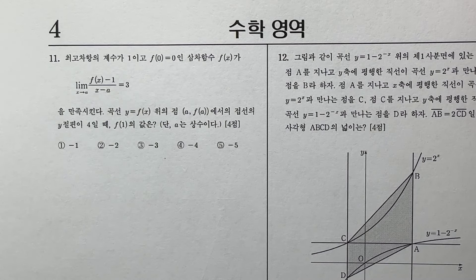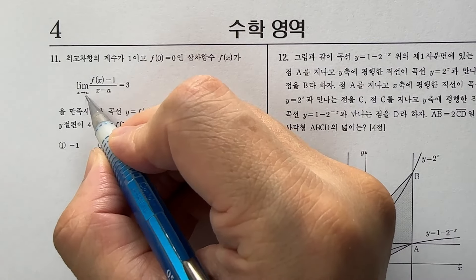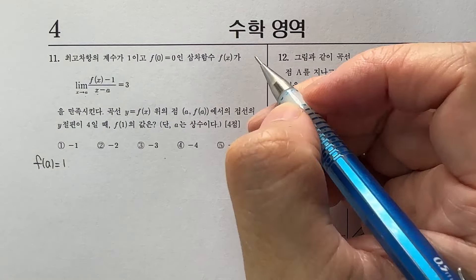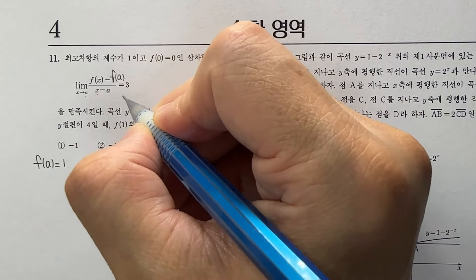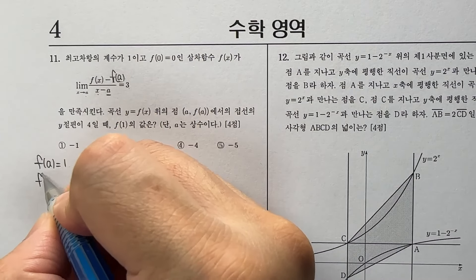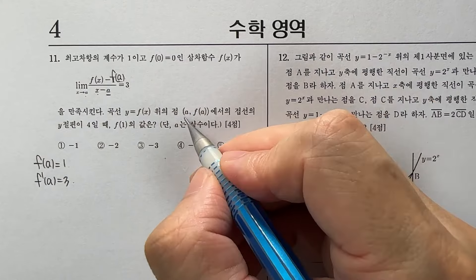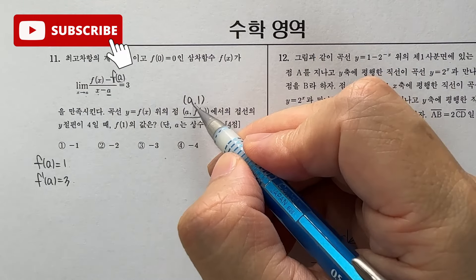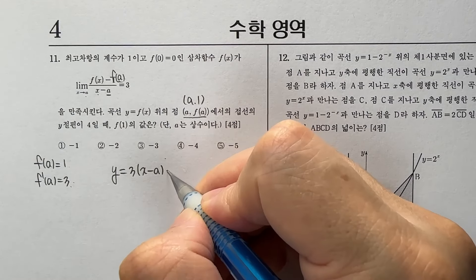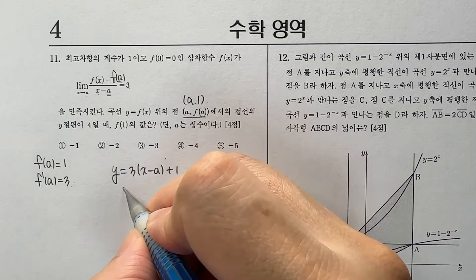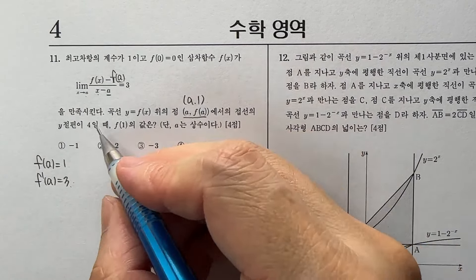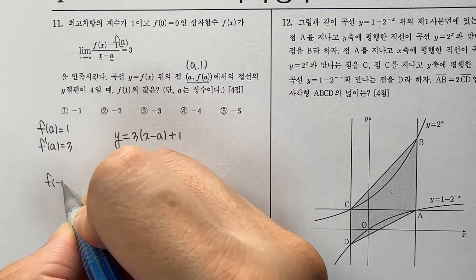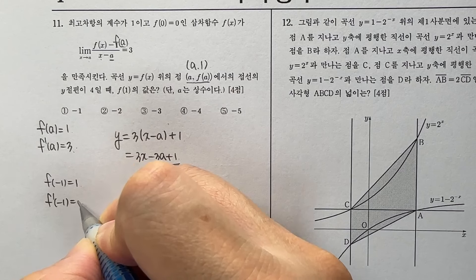최고차항 계수가 1이고 f(0) = 0인 3차함수 f(x)에 대해서, x→a일 때 극한값에서 분모와 분자가 모두 0이 되어야 하기 때문에 f(a) = 1이 됩니다. 평균변화율의 정의에 의해 f'(a) = 3이 됩니다. a, f(a) = a, 1에서의 접선의 방정식의 y절편이 4일 때, 기울기가 3이면서 a, 1을 지나가는 접선의 방정식을 구합니다.